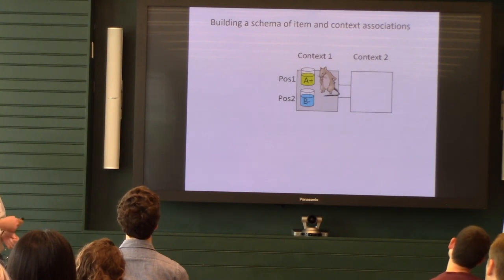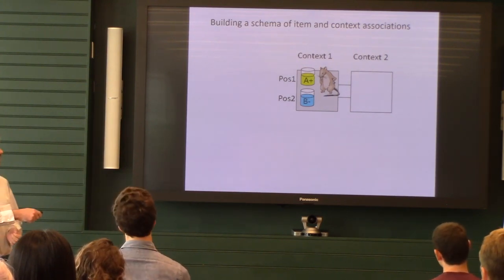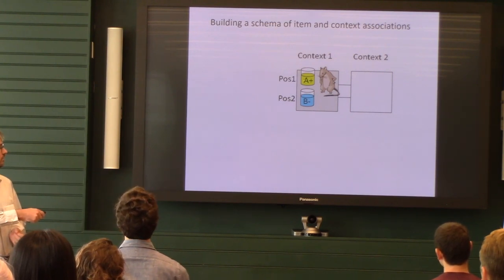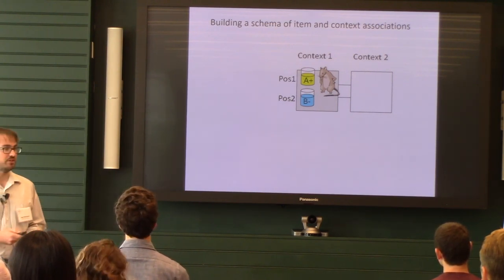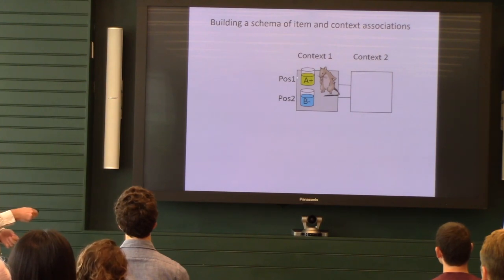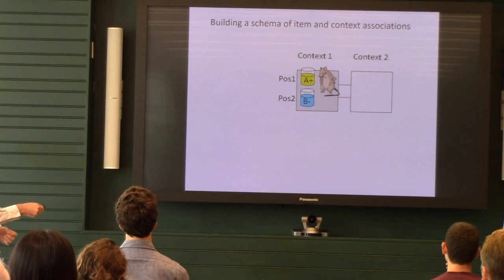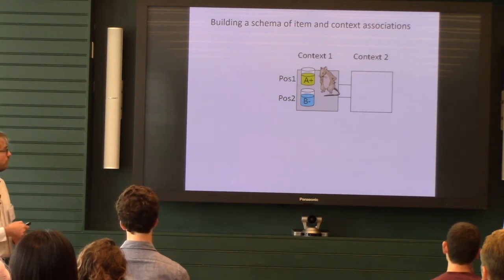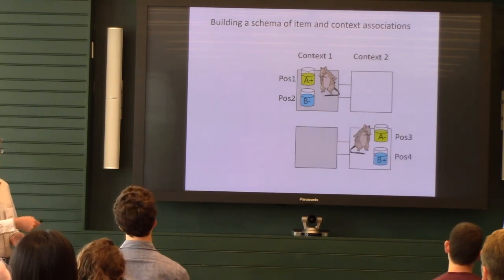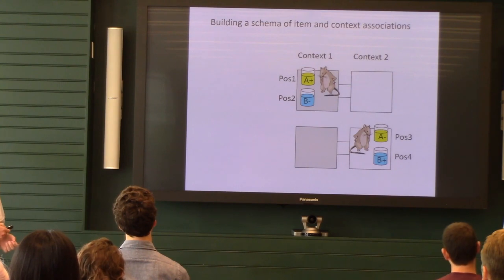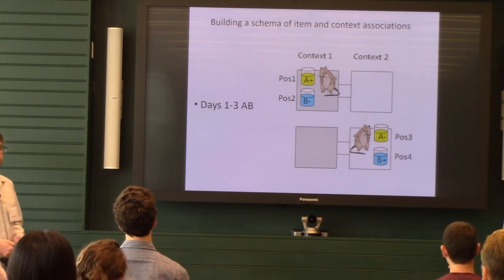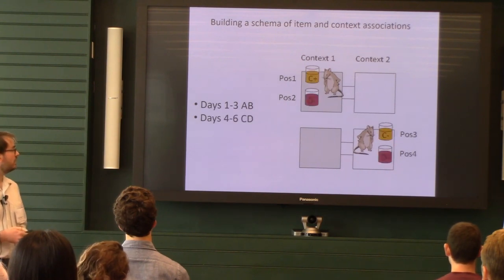We trained animals so that when they're on one side of the environment, they're confronted with a binary choice: do I dig for a cereal reward in this scented terracotta pot, or do I refrain from digging and go to the other pot? In context one, object A is always rewarded; in the opposing context, the reward contingencies are flipped and the animal needs to choose the other pot. Animals can learn this task within a single day, and we overtrained them — this is the dataset that some of the people here are working with.